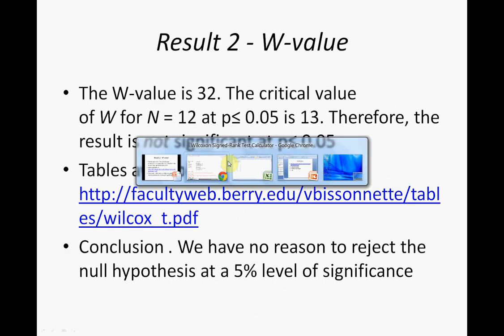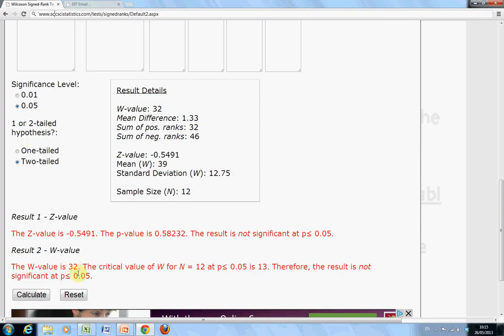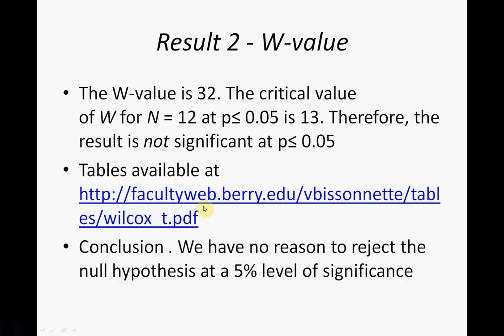For the W value: going back to the calculator, the W value is 32 and the critical value of W is 13 — you can look up the tables on facultyweb.berry.edu. If our W score is less than or equal to 13, we reject the null hypothesis. Our W value is 32, which is not less than 13, so we are in the acceptance region. We have no reason to reject the null hypothesis at a 5% level of significance.